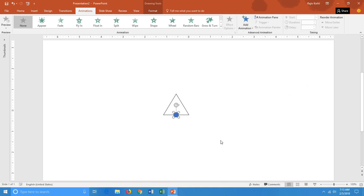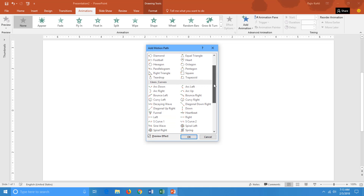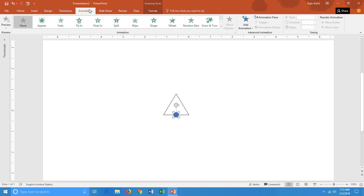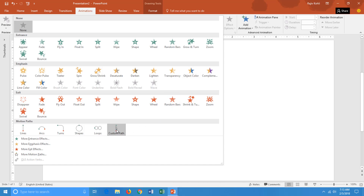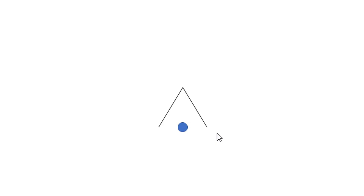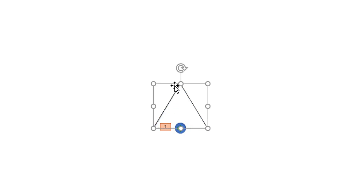For the custom motion path, go to Add Animation, then More Motion Paths — but you will never find the custom motion path in that list. To use it, you always have to use the drop-down button in the Animation tab and select Custom Path from there. Now you can draw the path as you like and define the starting point. I click first right here, take the mouse over, click again, and close the path — this way you don't have to adjust the motion path position at all.